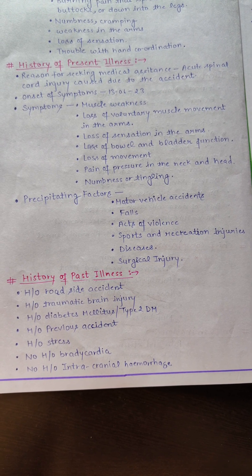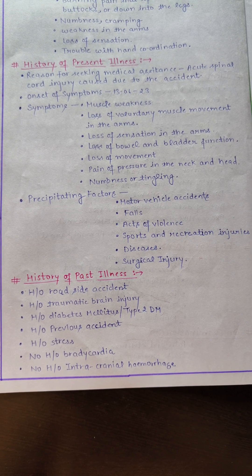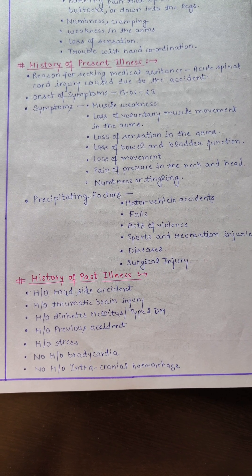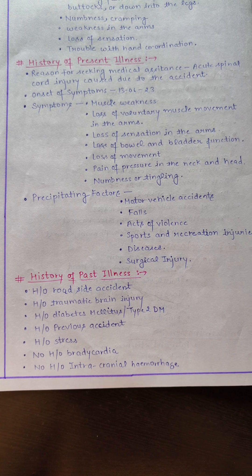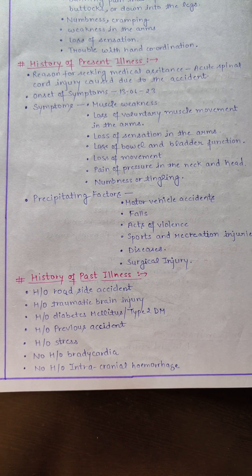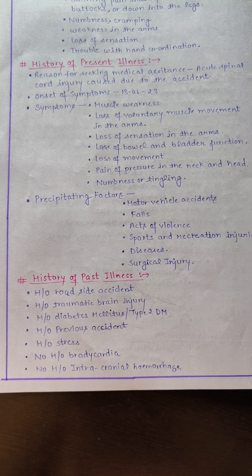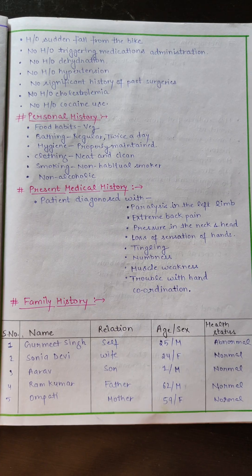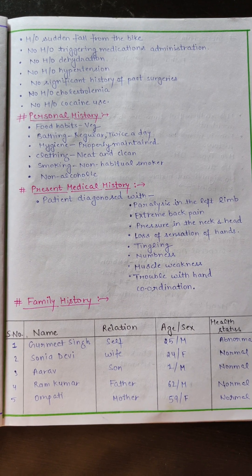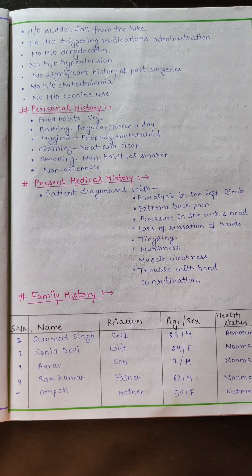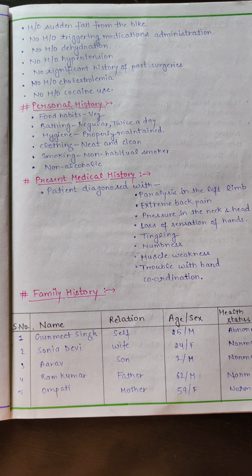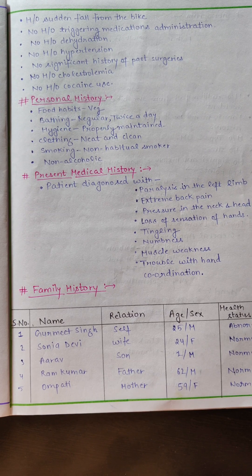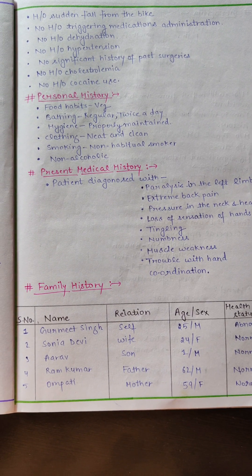The history of past illness: the patient had a history of roadside accident and traumatic brain injury. In the past, the patient had diabetes mellitus type 2 and a history of stress. The patient doesn't have a history of bradycardia, no intracranial hemorrhage. In the roadside accident, the patient fell from a bike. There is no history of triggering medication, dehydration, hypertension, significant past surgery, hypercholesterolemia, or cocaine use.